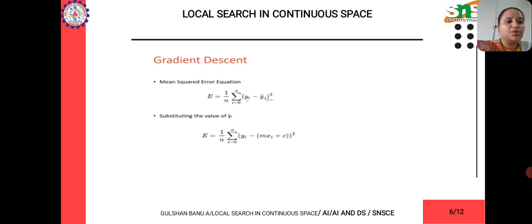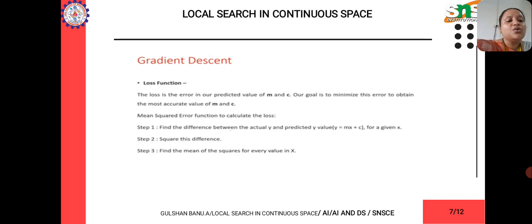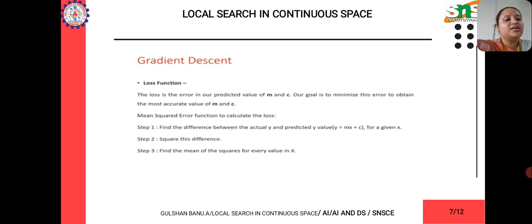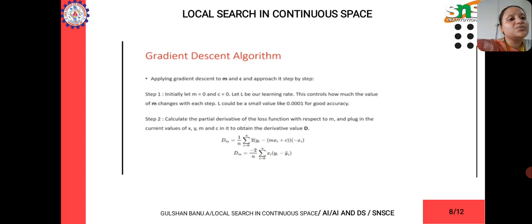First, we take the mean squared value, which is used to find the difference between the different equations: defined as (1/n) · Σ(i=0 to n) of (yi − ŷi)². When you substitute ŷi as (mxi + c), you get the error value. The loss function represents different errors accumulated with m and c. Initially, m and c are set to 0 since we are initiating the values, and the learning rate l is set to a very small value like 0.001 for good accuracy.